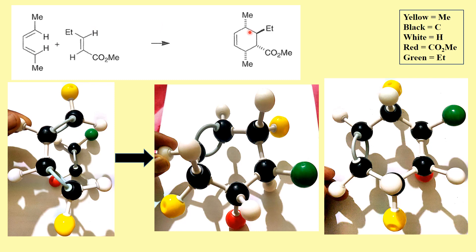Since both methyl groups are going behind the plane, the ester is going to be behind the plane and this group is coming out of the plane. So when you have endo addition, these two functional groups are always staying in the same relative orientation. Just remember this — in endo addition, the ester group and methyl groups have a specific cis relationship.